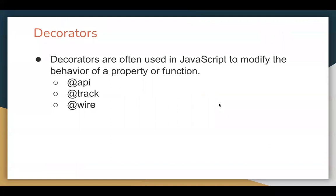We have three decorators that we can use in the JavaScript file of LWC. Decorators are used in JavaScript to modify the behavior of a property or function. The three decorators are @api, @track, and @wire. Let's understand the use of each decorator with the help of examples.